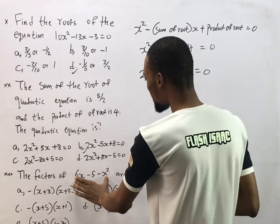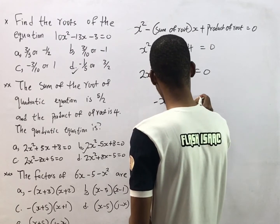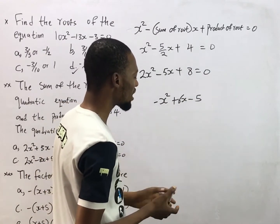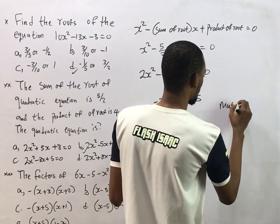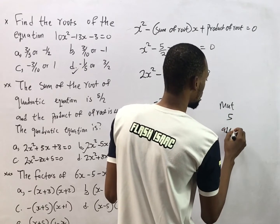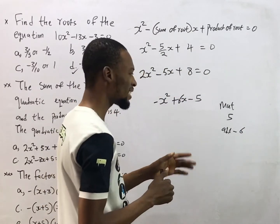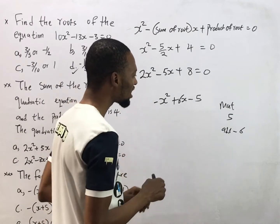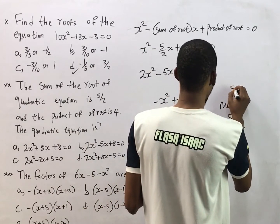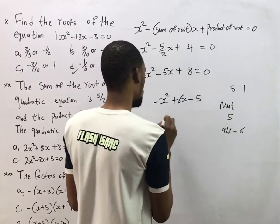For the last question, we are asked to factorize the expression, which we can write as negative s squared plus 6s minus 5. To factorize, we look for two numbers that when multiplied give 5 and when added give 6. Let's think about what two numbers satisfy both conditions.